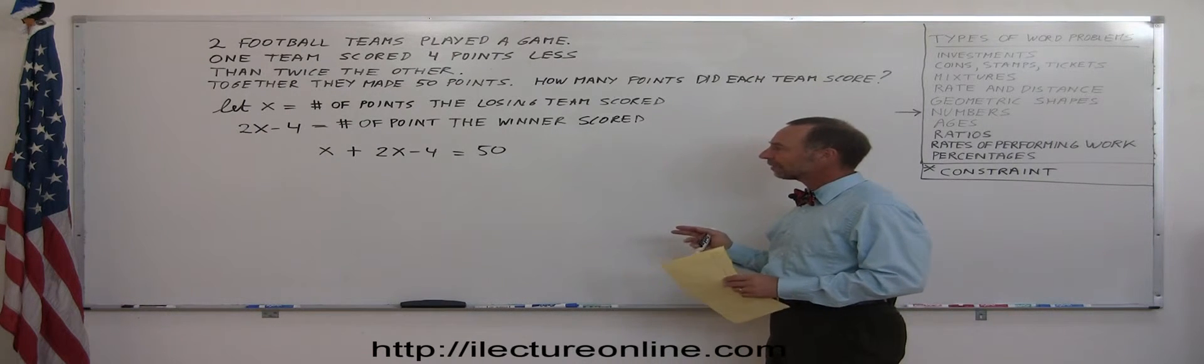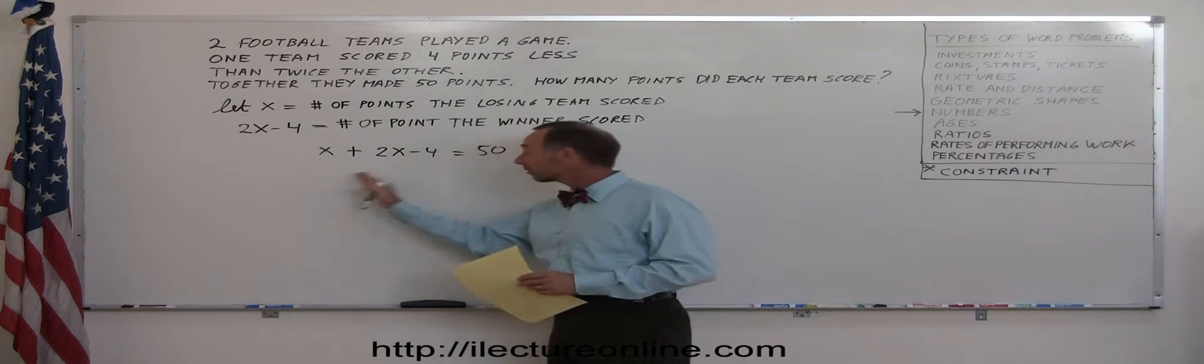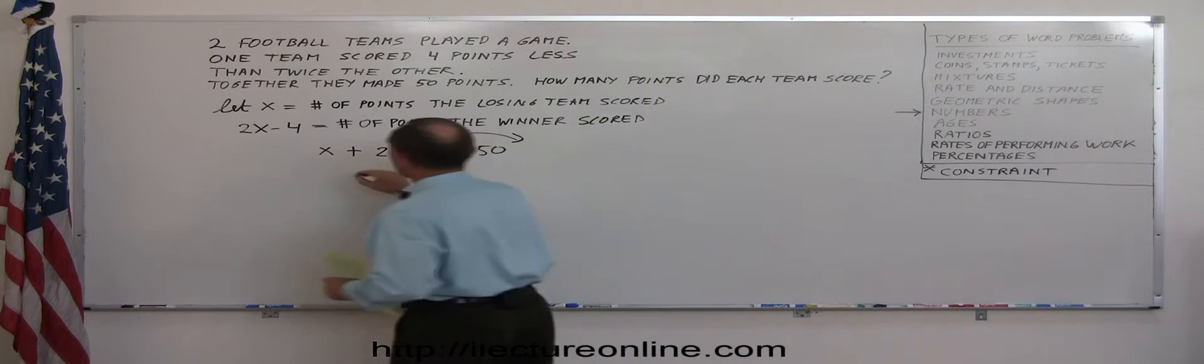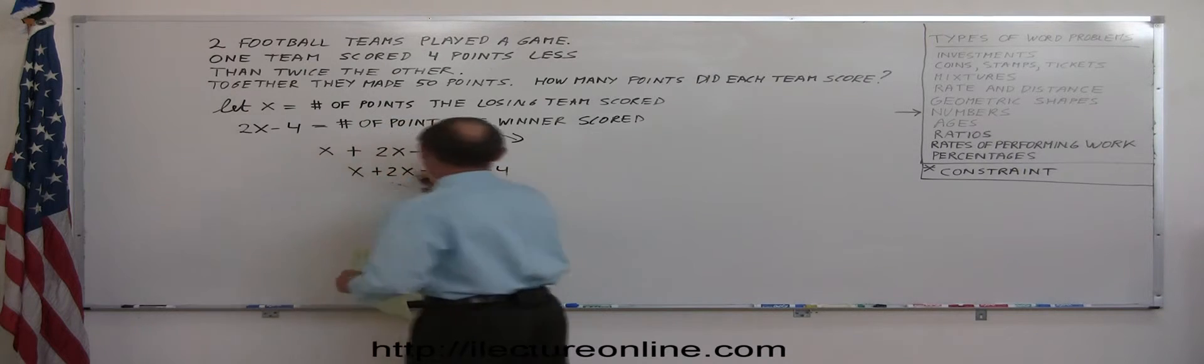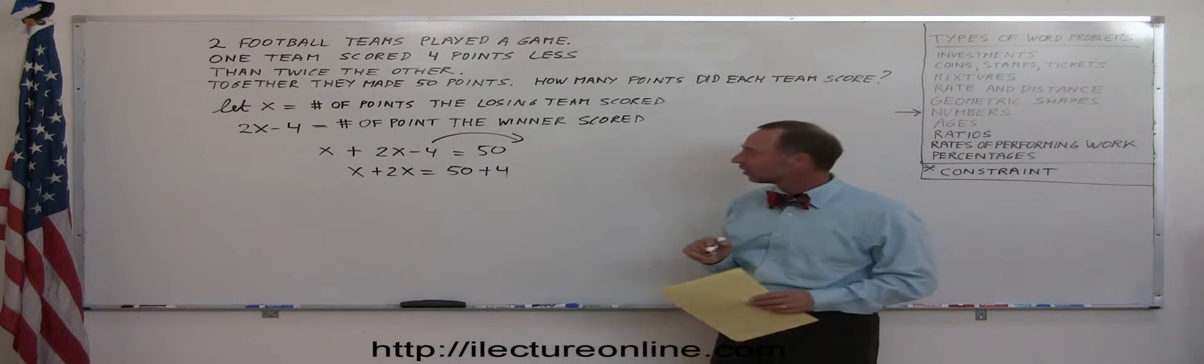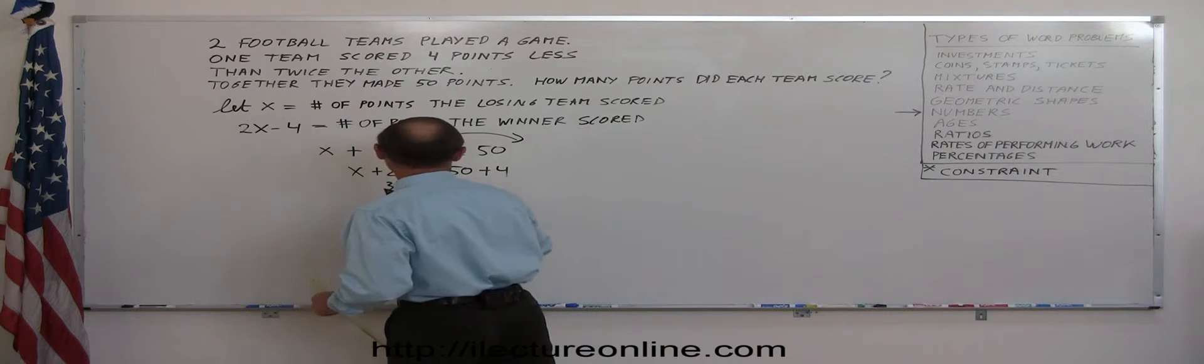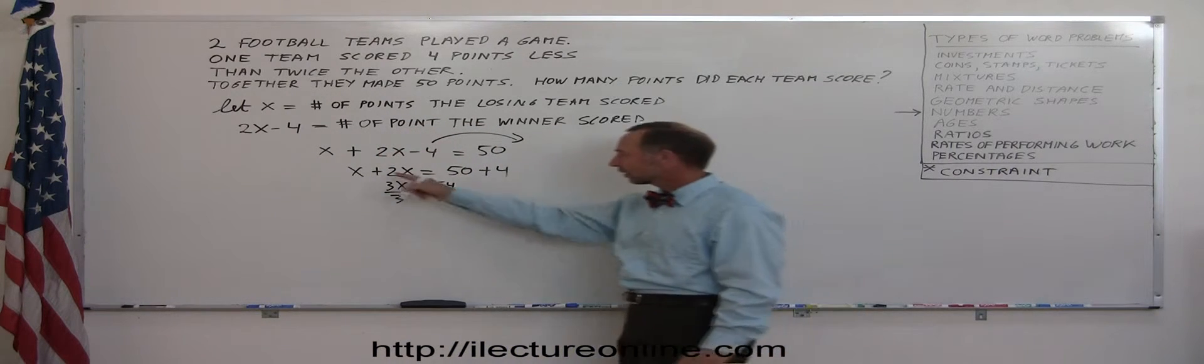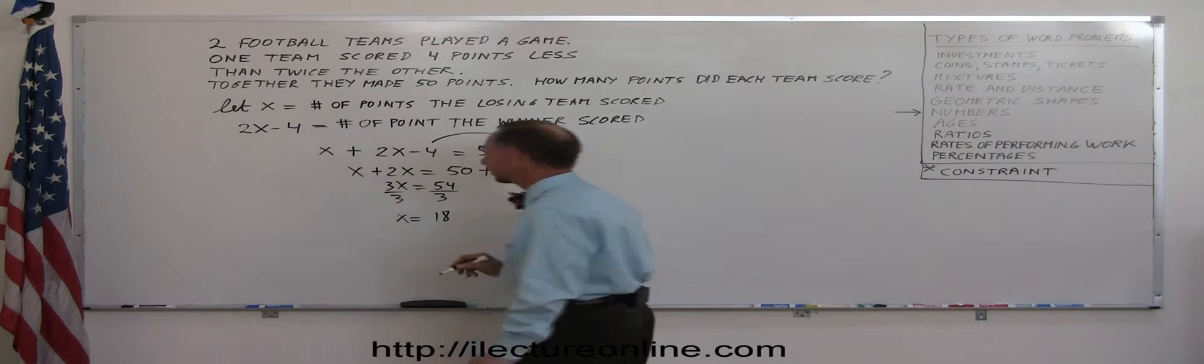Now we just simply have to solve this as a linear equation. We put all the x's on the left side, they're already there. Put the negative 4 on the other side, so we end up with x plus 2x equals 50 plus 4. Remember, when we cross the equal sign, the sign changes. We combine like terms: x plus 2x is 3x, and 50 plus 4 is 54. Divide both sides by 3, the numerical coefficient in front of x. Of course that cancels out. We end up with x equals, 3 goes into 54 18 times.